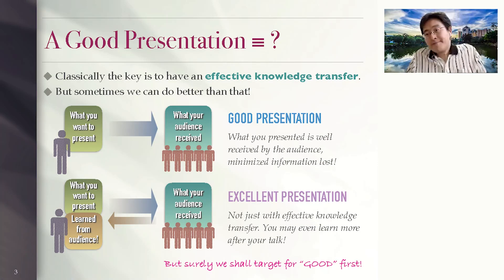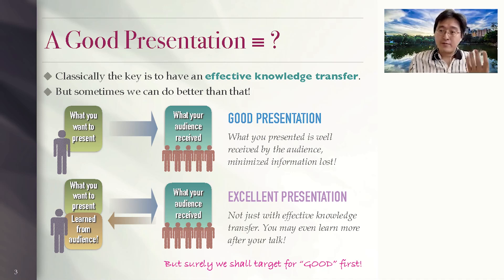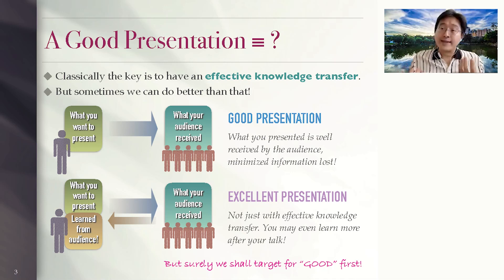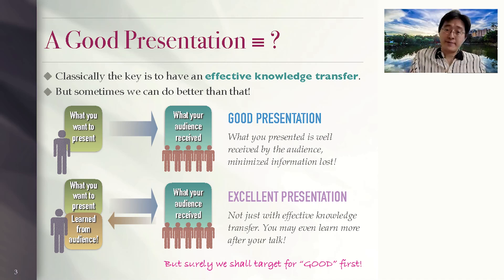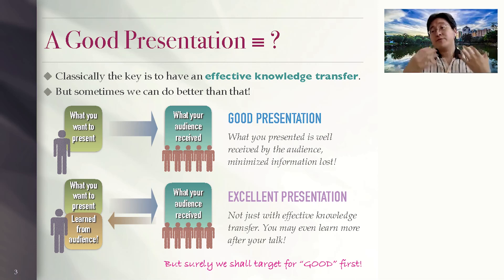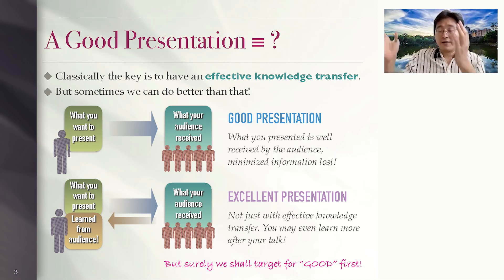第一個：什麼是好的演講？如果用比較classical的說法，好的演講不外乎就是一個有效率的知識傳遞（effective knowledge transfer）。就是講者，尤其是我，怎麼把我所知道的東西很有效率地傳遞給各位聽眾。就是某種程度，我的資訊幾乎不損耗，我講的東西交到你手上的時候幾乎沒有損耗。